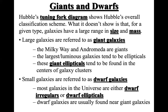Dwarf galaxies are smaller in size and also have a smaller mass. Most galaxies in our universe are either dwarf irregular or dwarf ellipticals, which means they are small in terms of size and mass. These are the most abundant types of galaxies in the universe that we know.